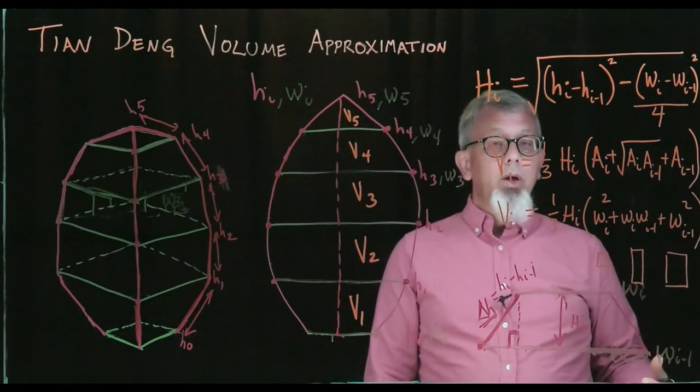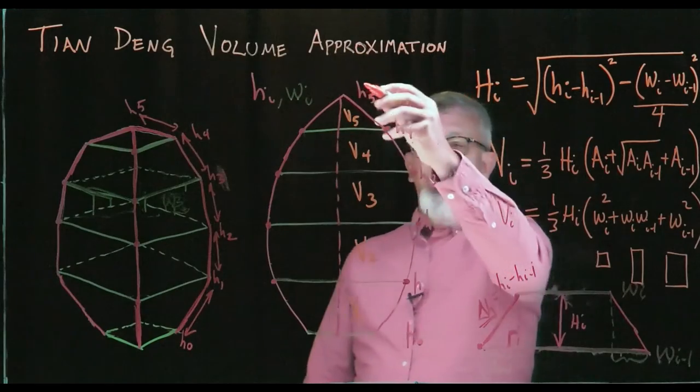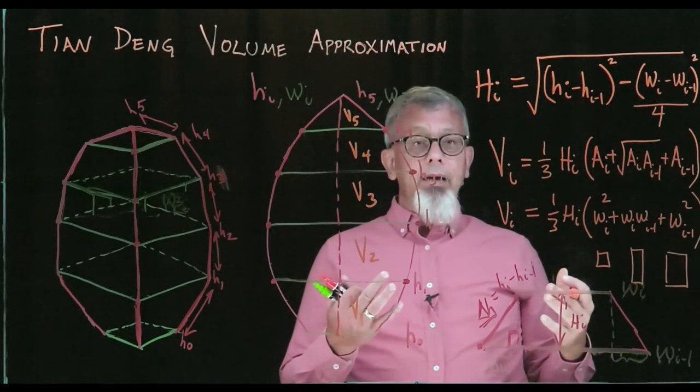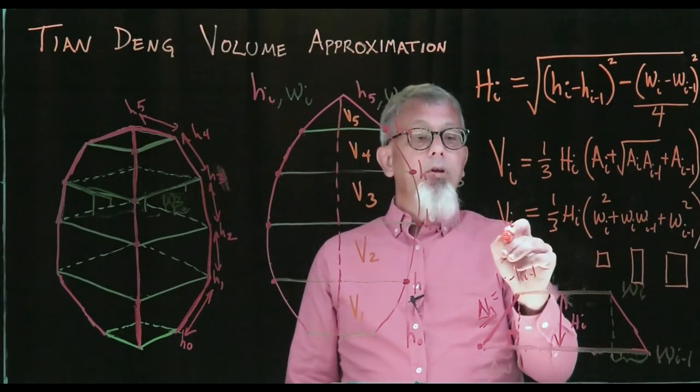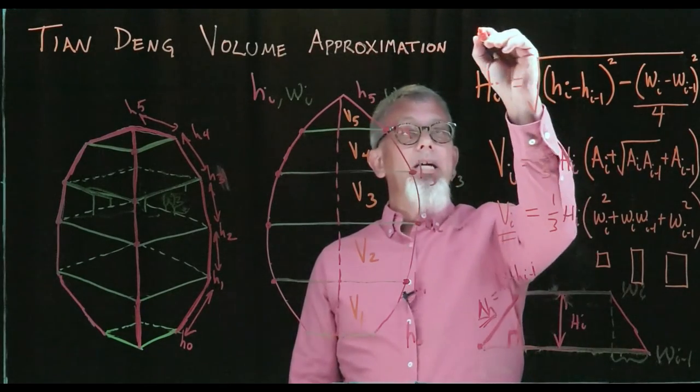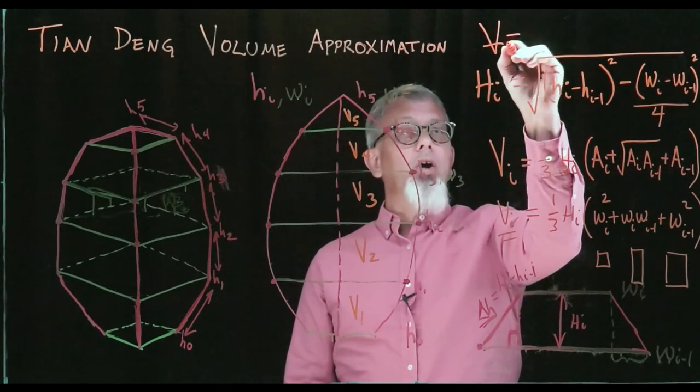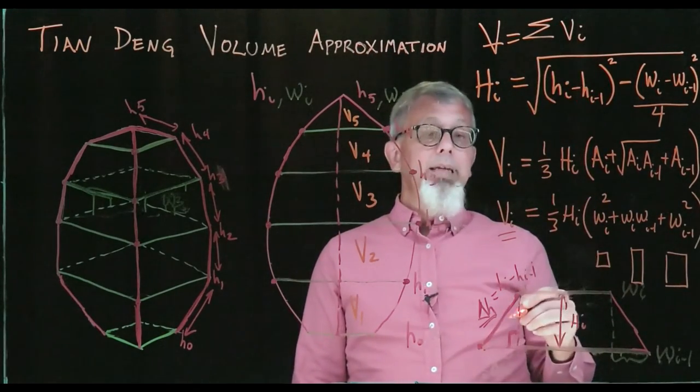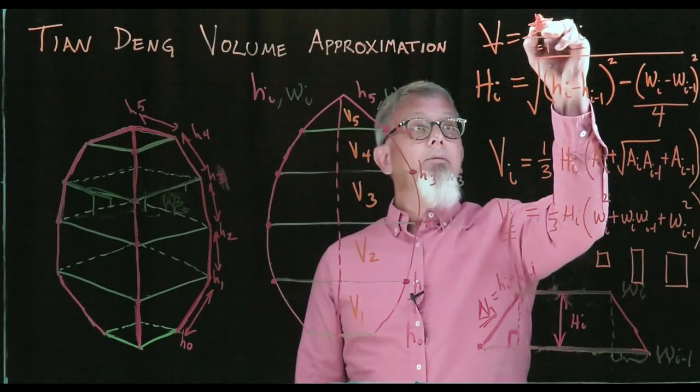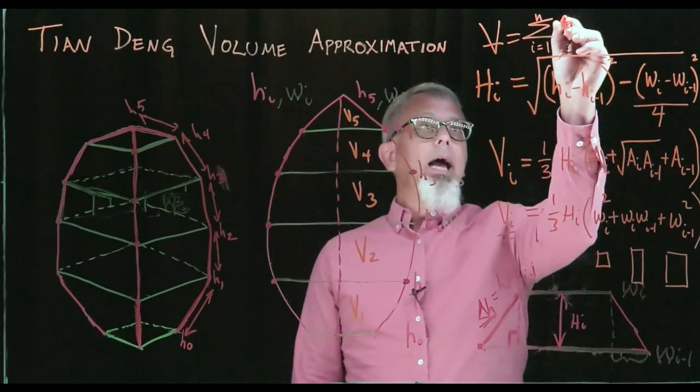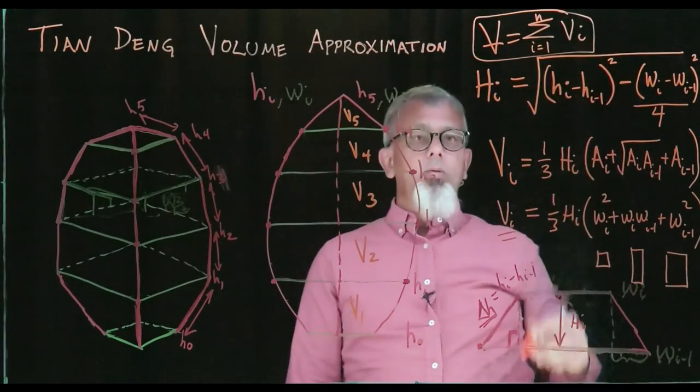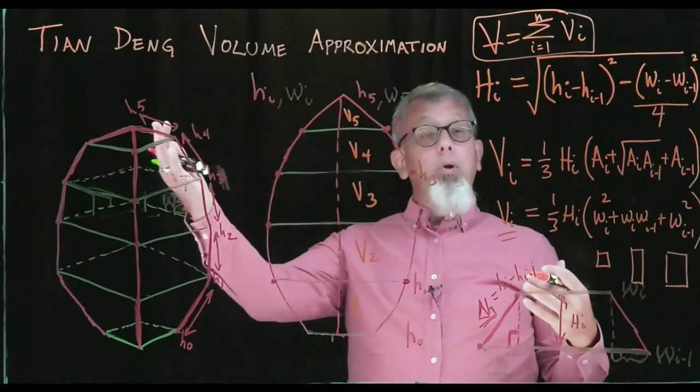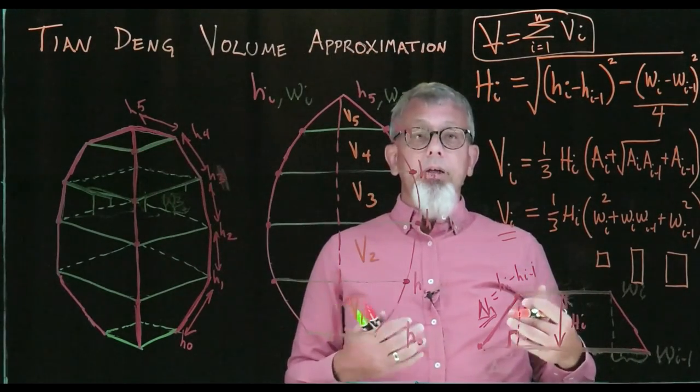We now have the means that if we've measured along the sides this series of heights and widths along the sides of the Tian Deng, we now have the means of finding the volume of each of those pieces. Our last piece is then to find the total volume is to add up all of those other volumes. There's my sum, meaning to add up as i goes from 1 to however many we have of all the other volumes. That formula we will use in the next video to go ahead and show an example of calculating the volume, of approximating the volume using calculation of a Tian Deng Lantern.